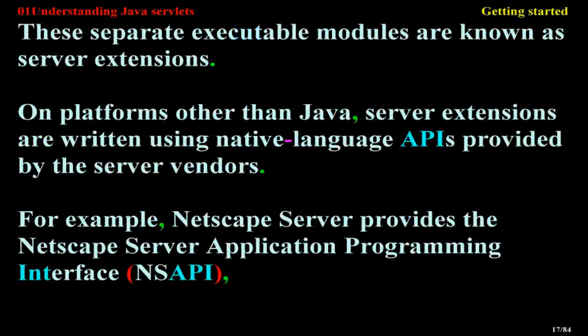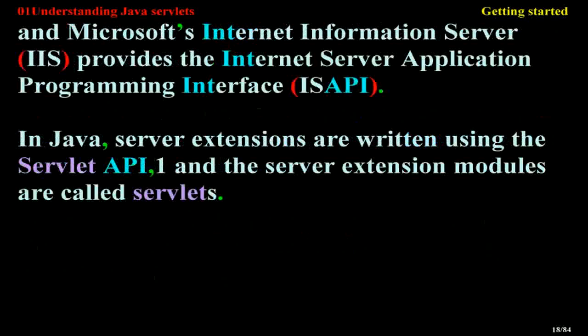Fortunately, most industrial-strength servers have been supporting such modules for a long time, and they have made the out-of-memory CGI scripts obsolete. These separate executable modules are known as server extensions. On platforms other than Java, server extensions are written using native language APIs provided by the server vendors. For example, Netscape's server provides the Netscape Server Application Programming Interface, NSAPI, and Microsoft's Internet Information Server, IIS, provides the Internet Server Application Programming Interface, ISAPI. In Java, server extensions are written using the Servlet API, and the server extension modules are called Servlets.